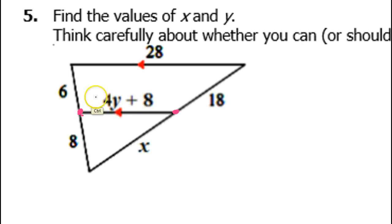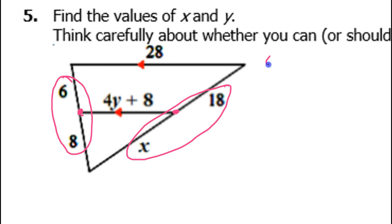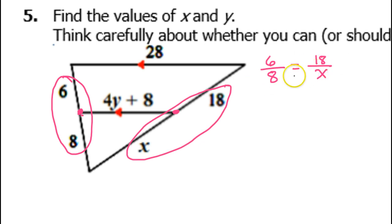Instead, we will simply do the side-splitter theorem, where we make a fraction out of these two and another fraction out of these two, because these segments are proportional. So I can do 6 over 8 is equal to 18 over x. And I can use this to find the value of x.